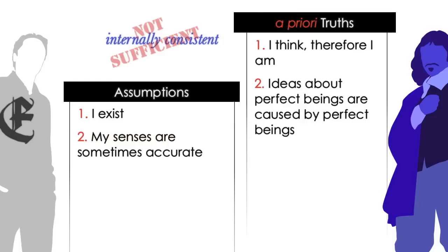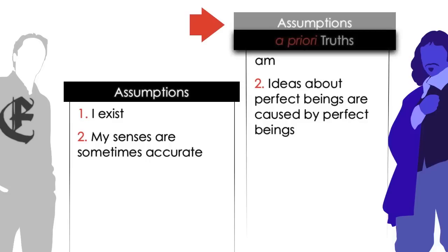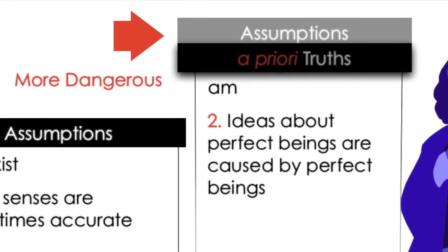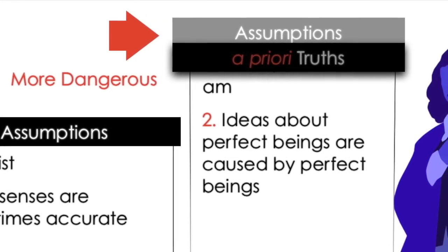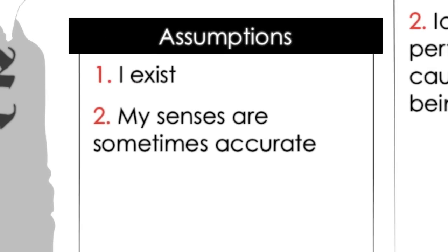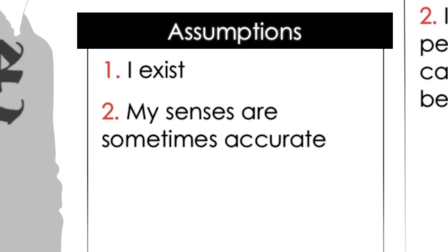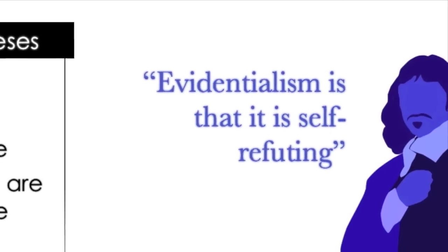So the claim of internal consistency doesn't rescue rationalists from the fact that they are making at least some assumptions just like me, no matter how much you may try to squirm out of it by euphemistically labeling your assumption as self-evident or as an a priori truth. The reality is you are making an assumption, and it is more dangerous to unconsciously make an assumption but confidently label it as a truth than it is to consciously make an assumption and humbly be prepared to discover that it isn't true.